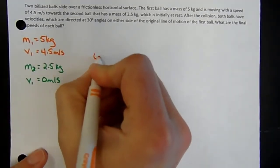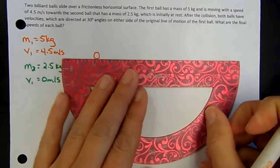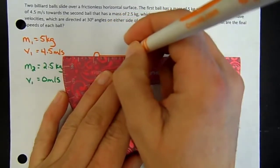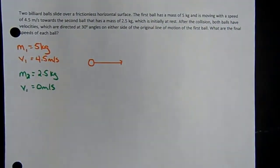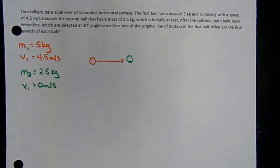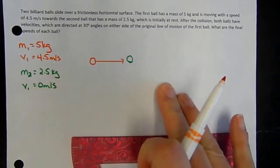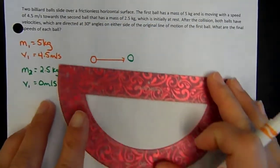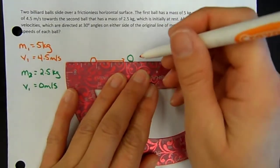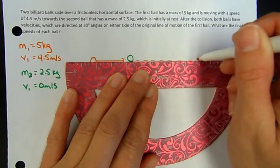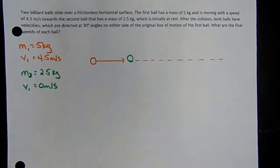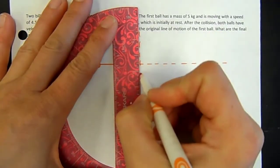Here is ball one going in a straight line in this direction, and it's going to collide with ball two. We're measuring from the original line of motion of the first ball — it could be going straight to the right, it doesn't really matter. We can define this as our x-axis, which then means our y-axis will be perpendicular to it.